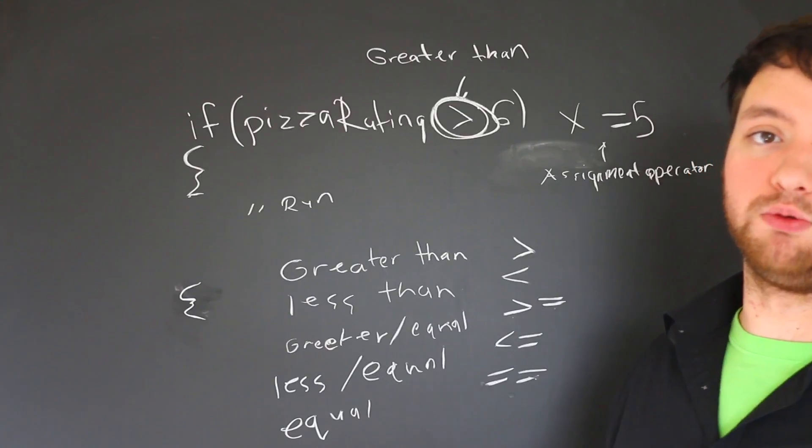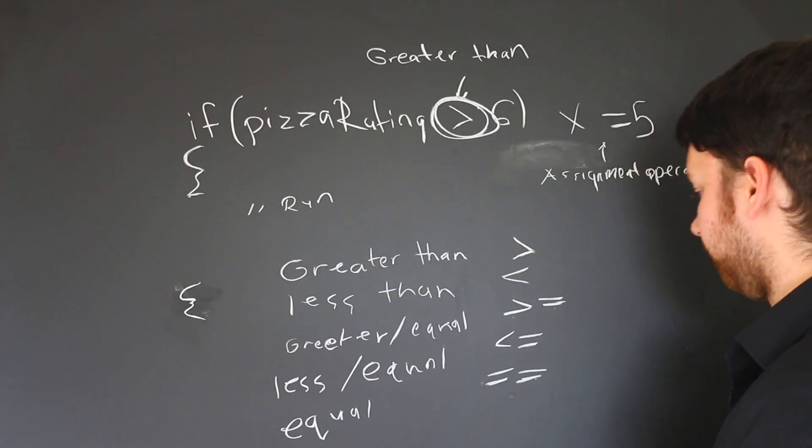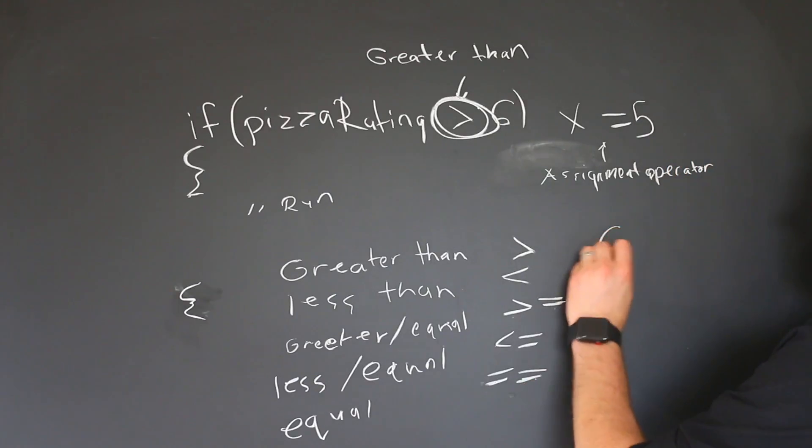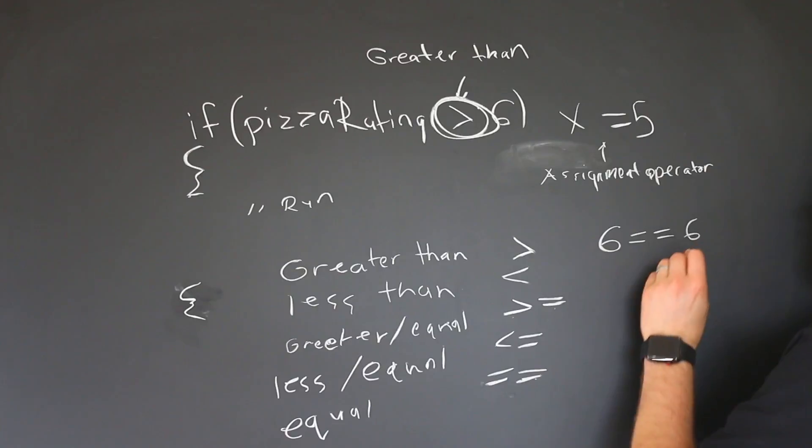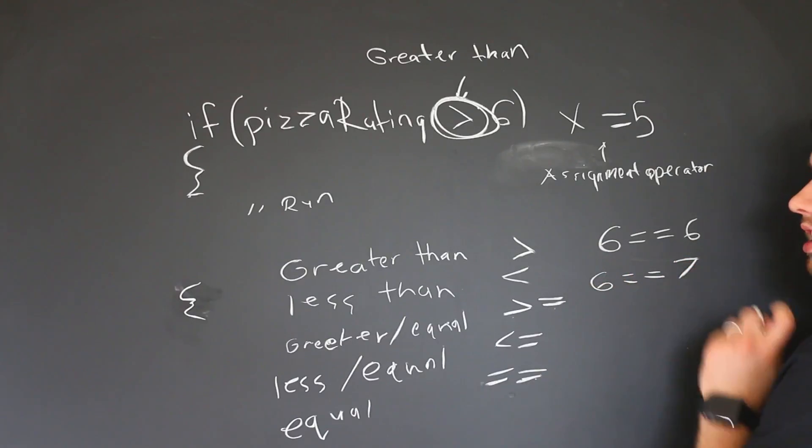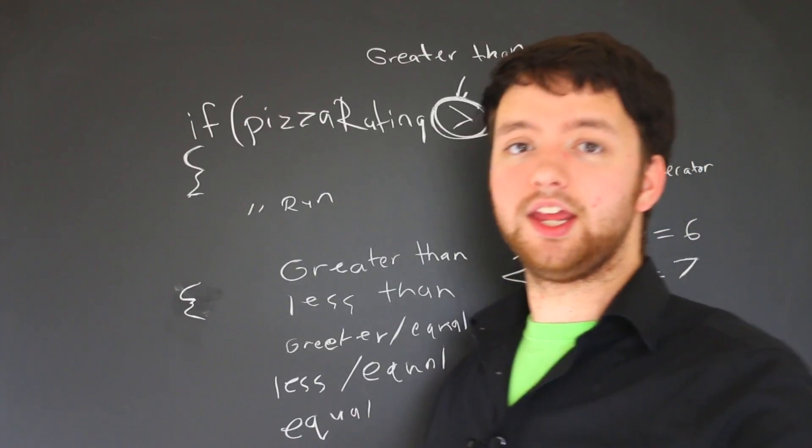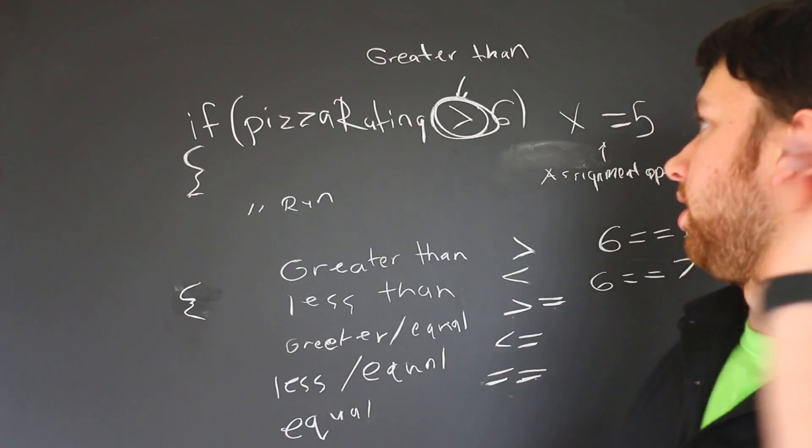So we have the double equals. To see this in action, it would be like this: six is equal to six, that is true. Six is equal to seven is false.